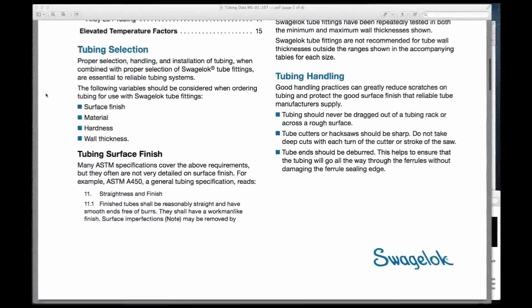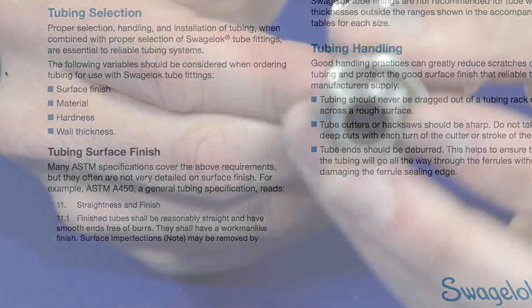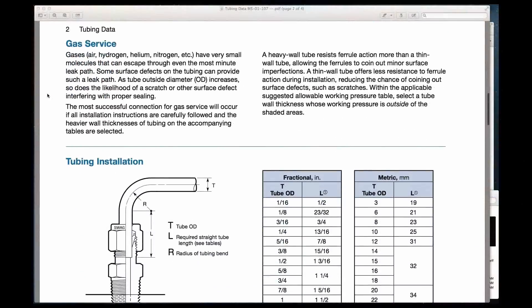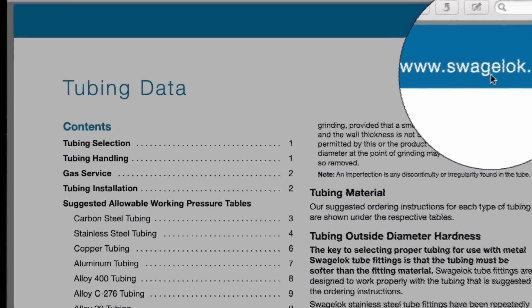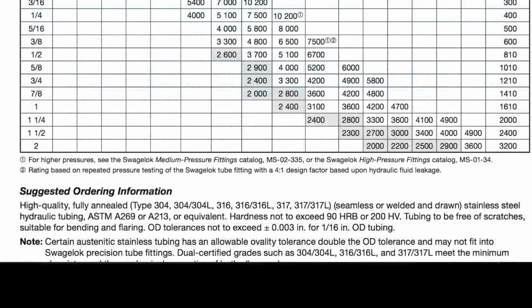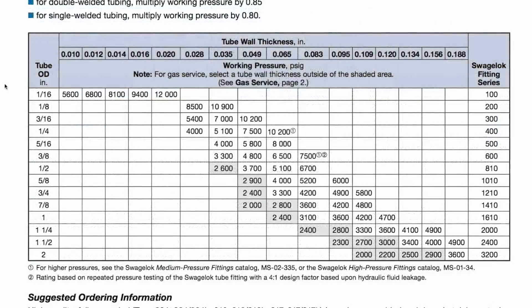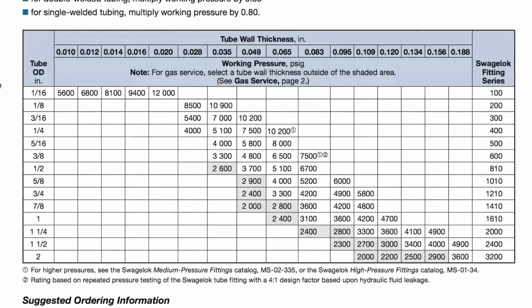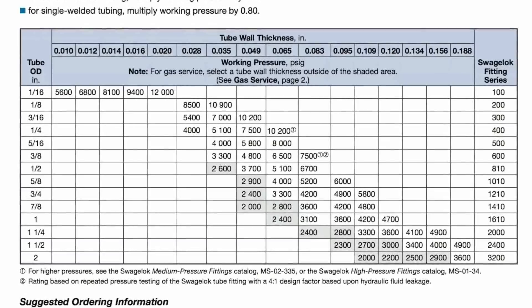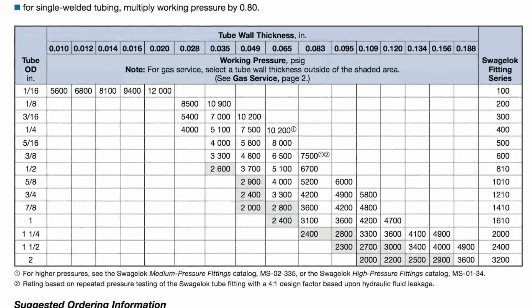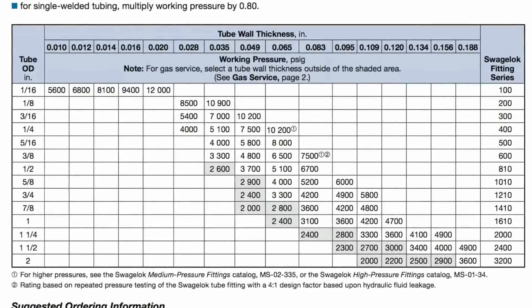Surface finish, material, hardness, wall thickness. Details on these variables can be found in Swagelok's publication entitled Tubing Data. In it, you will find suggested allowable working pressure tables and suggested ordering information for tubing to be used with Swagelok tube fittings. The tables have the outside diameter of the tubing on the vertical axis and the tube wall thickness on the horizontal axis. Tubing combinations without working pressure ratings are not recommended for use with Swagelok tube fittings.